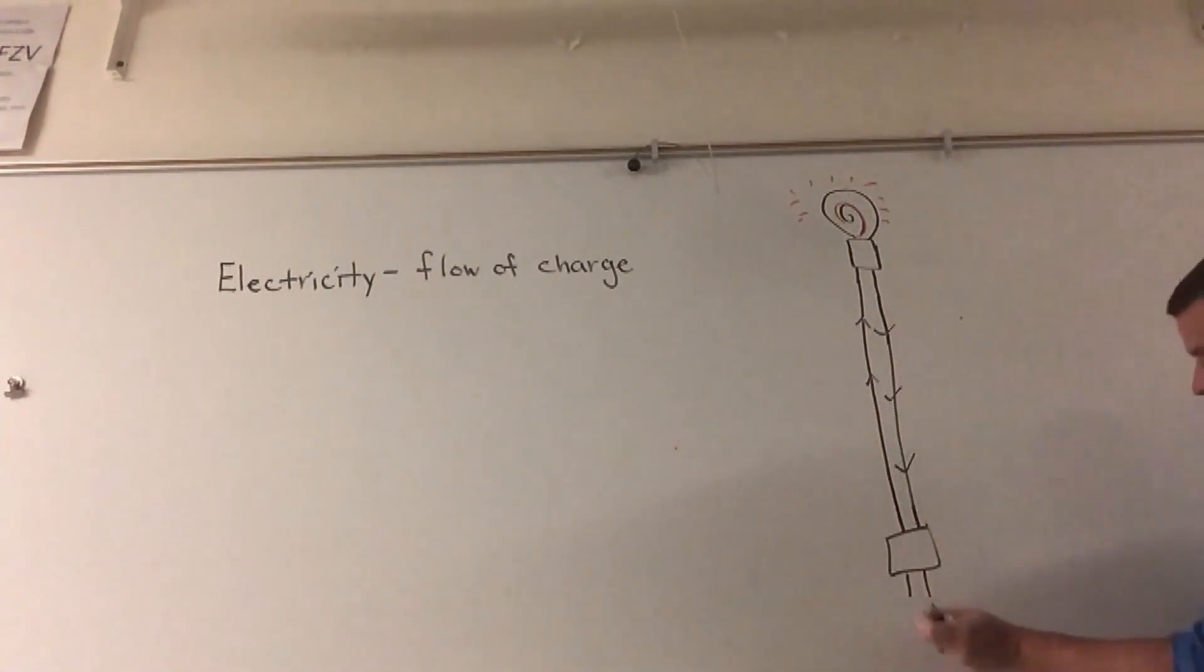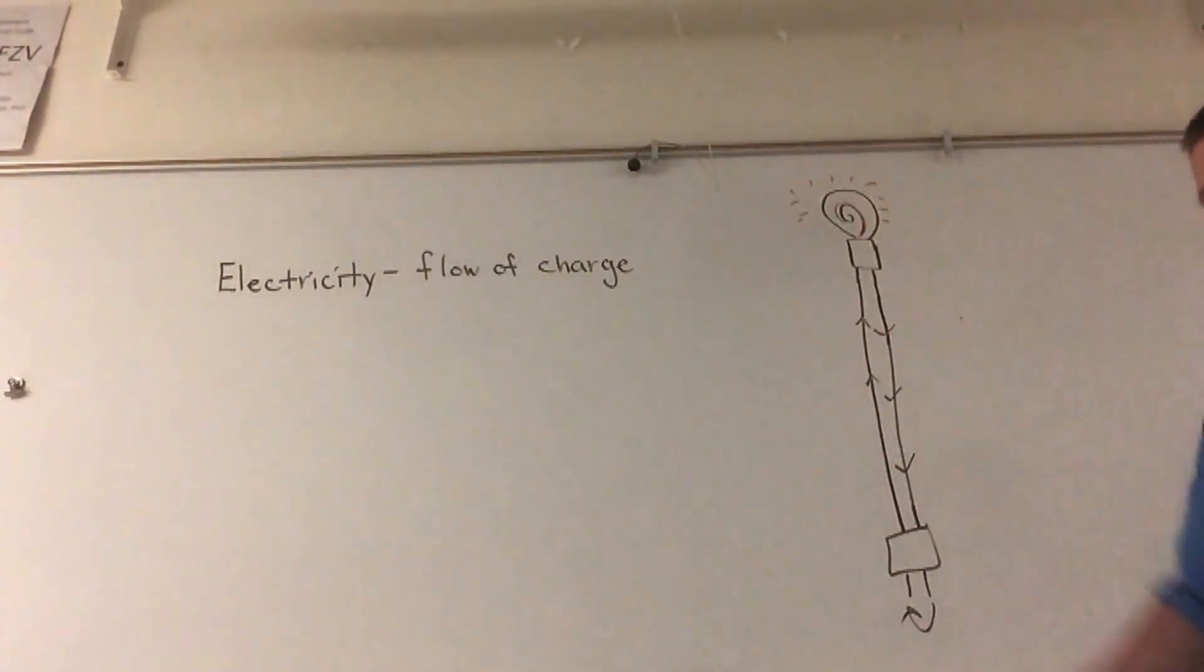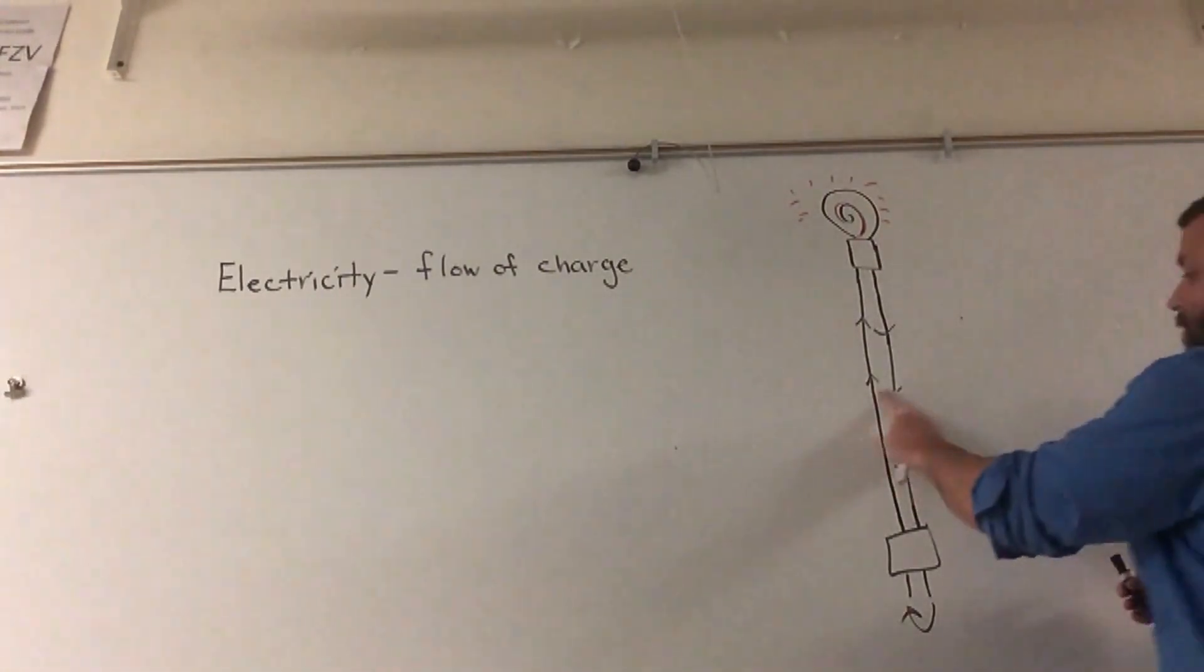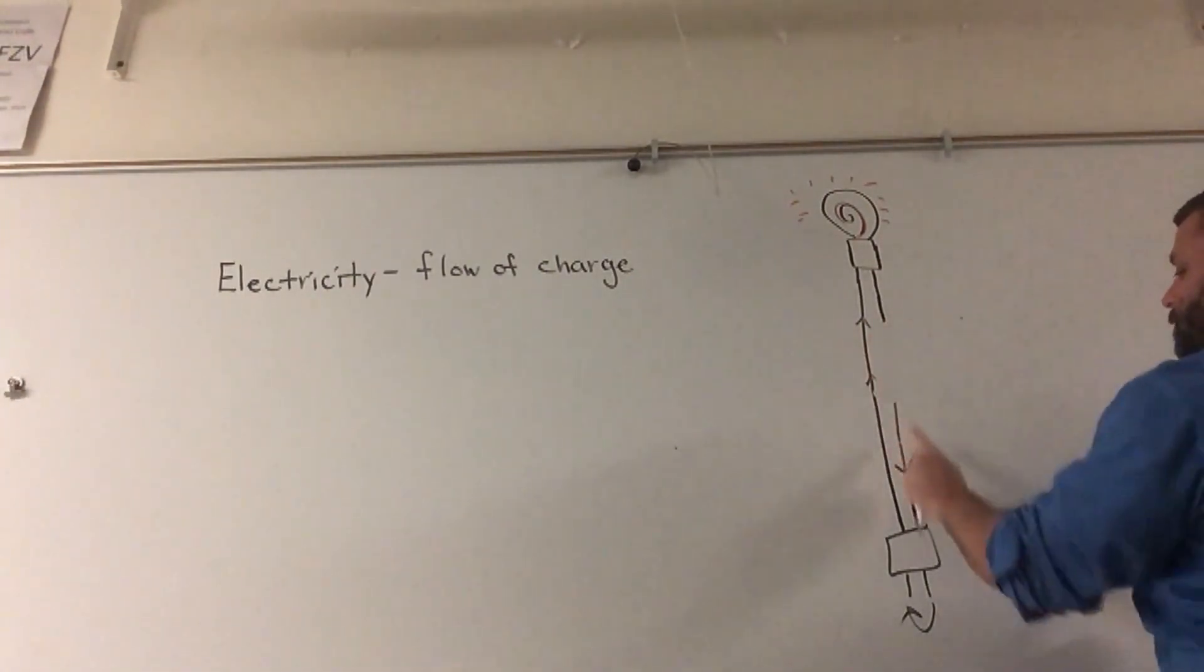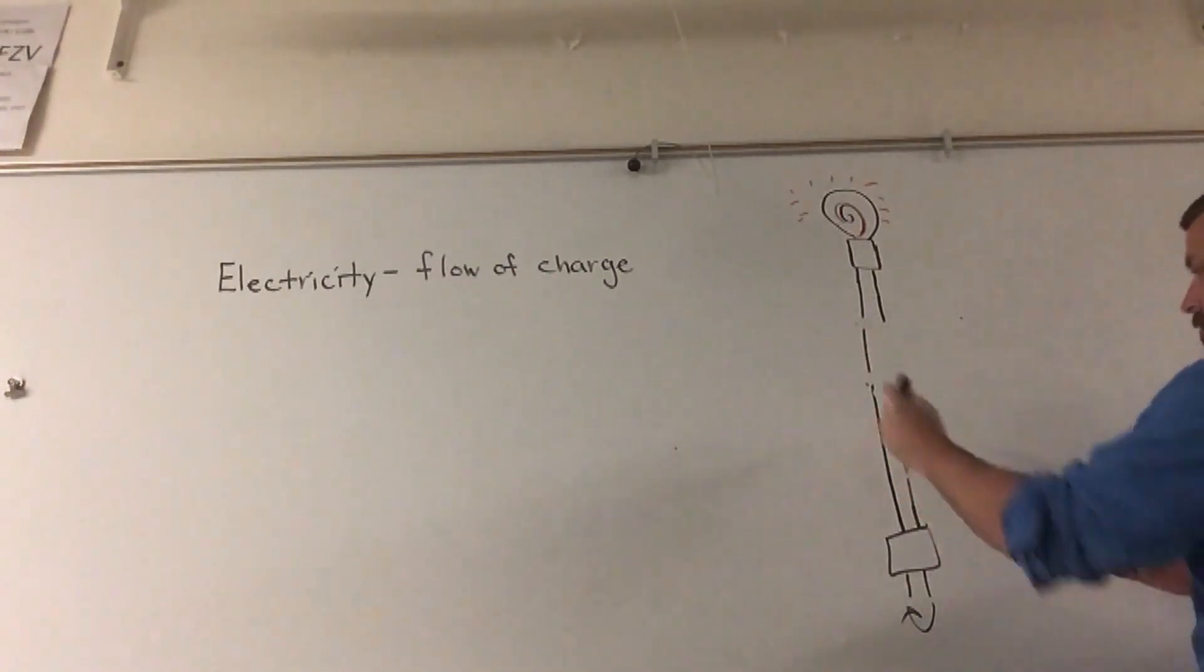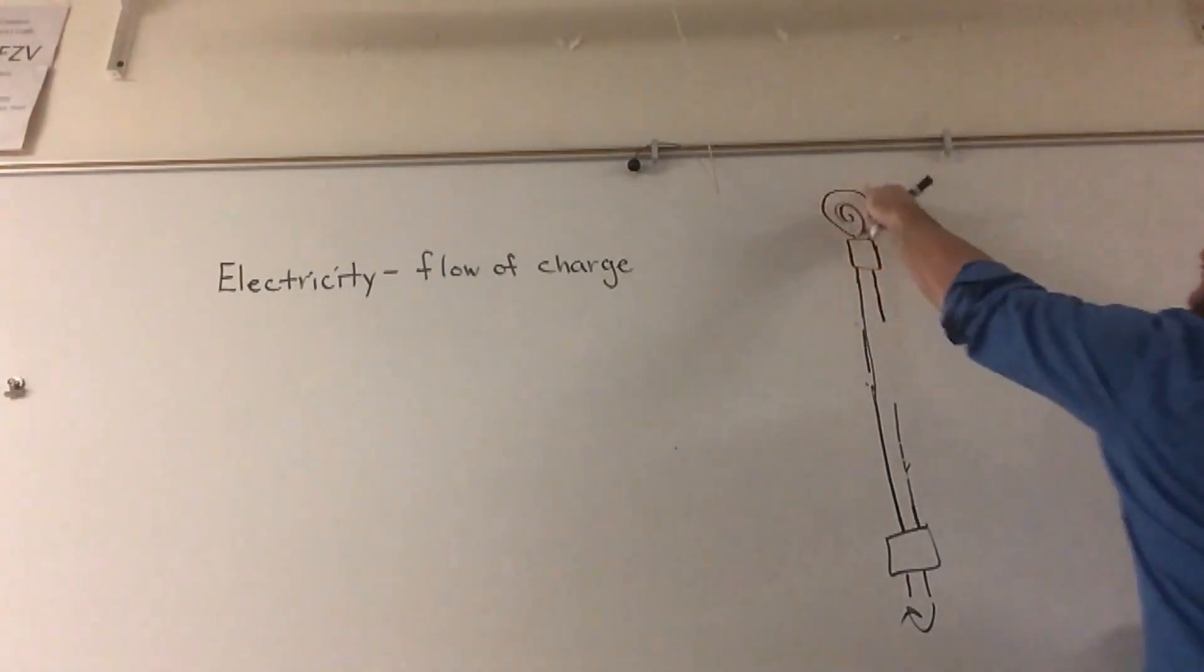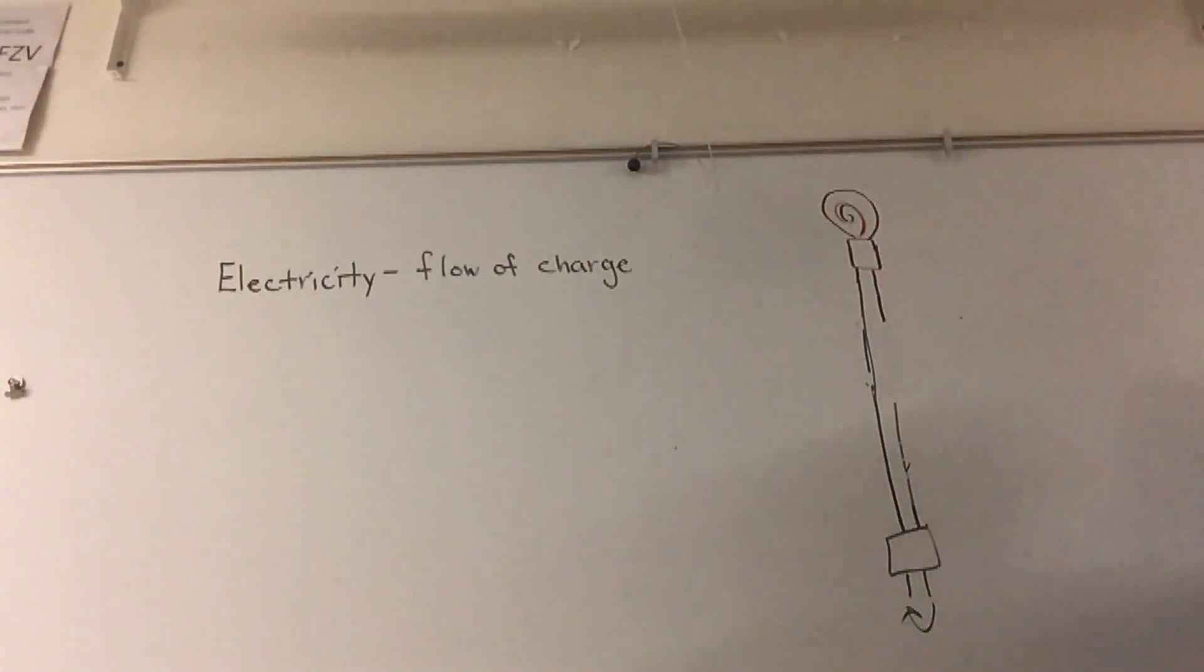As long as the circuit is intact, the charge can flow through the wires, heating up the filament inside. If I disrupt this wire by breaking it, the electrons can no longer flow through the light bulb and so the light bulb turns off.